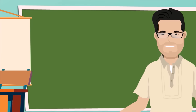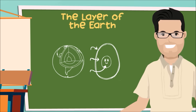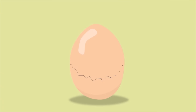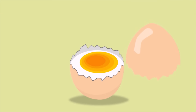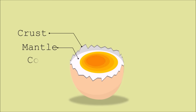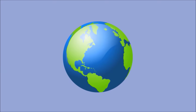The layers of the Earth can be simply compared to a hard-boiled egg. The shell can be identified as the crust, the white part is the mantle, and the yellow part is the core. And just like a hard-boiled egg, the Earth's crust is also broken, like broken pieces of eggshell. Each part is called a plate.